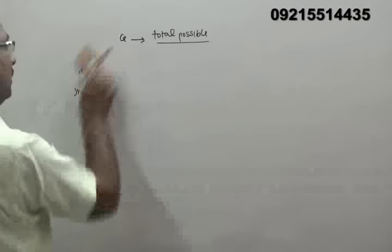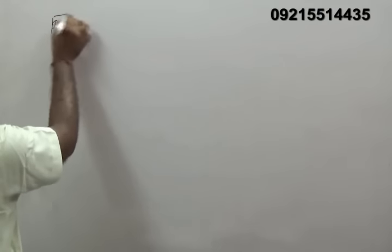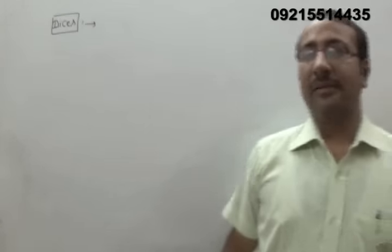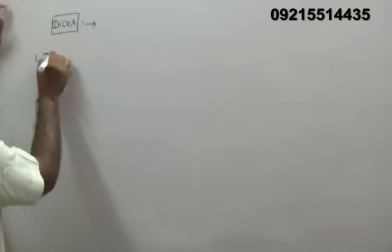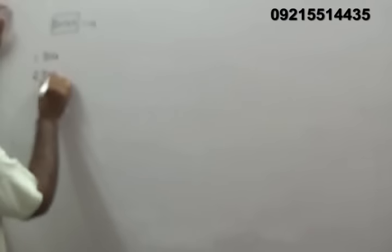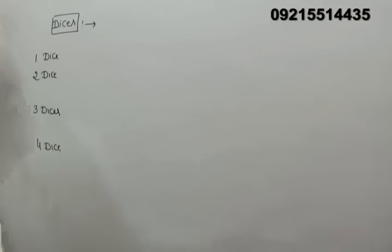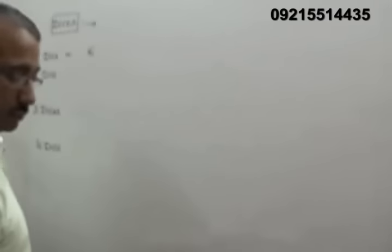Now we start different varieties of questions, beginning with the concept of dice. When a dice is thrown, total faces are 6 and it may show 1, 2, 3, 4, 5, or 6. When 1 dice is thrown, total possible outcomes = 6. When 2 dice are thrown, total outcomes = 6 × 6 = 36. When 3 dice are thrown, outcomes = 6³ = 216. When 4 dice are thrown, outcomes = 6⁴ = 1296.